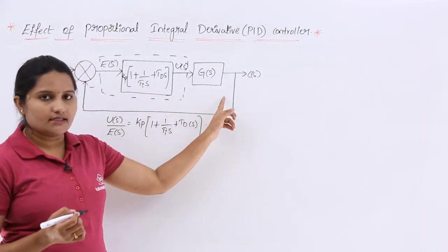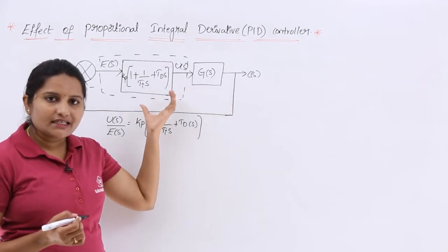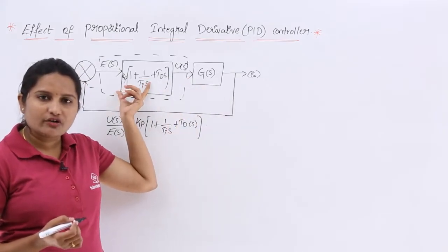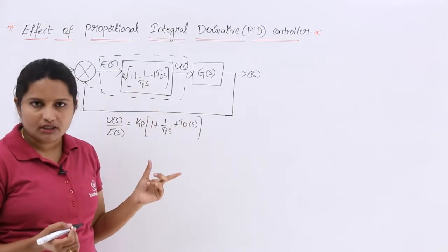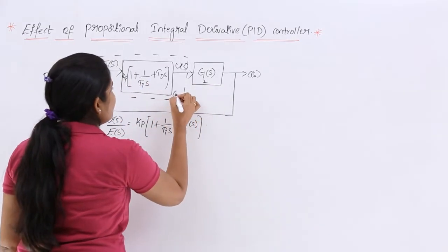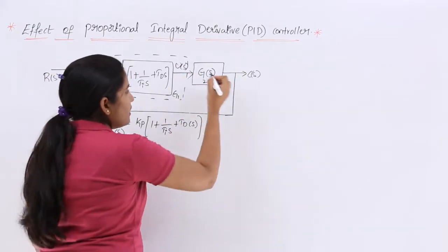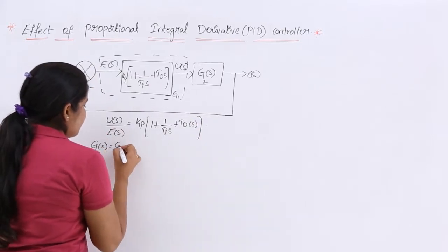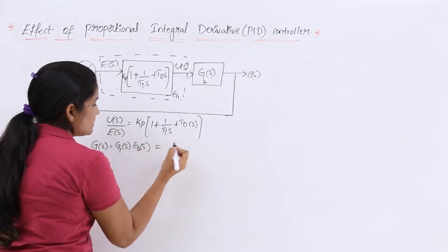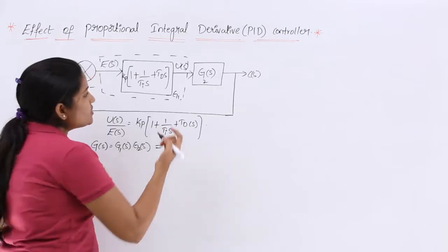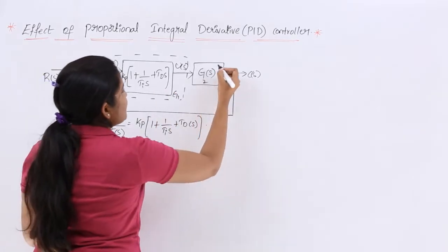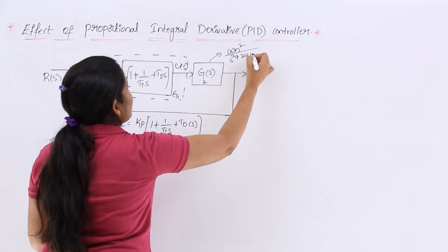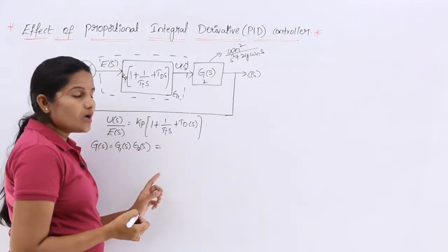We have two gains here — the PID controller is inserted in series with the open-loop gain, so we multiply them together. Treating the PID controller transfer function as G1 and the plant as G2, the combined G(s) = G1(s)·G2(s). I am considering the plant as ωn²/(s² + 2ζωn·s), so series gains are multiplied to get the overall gain.